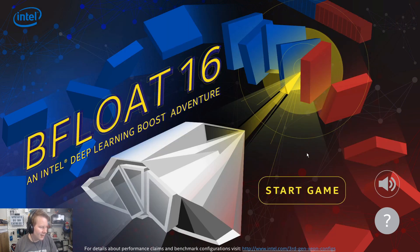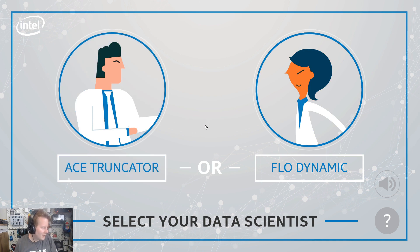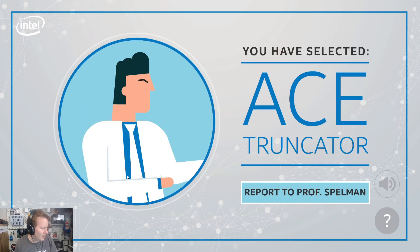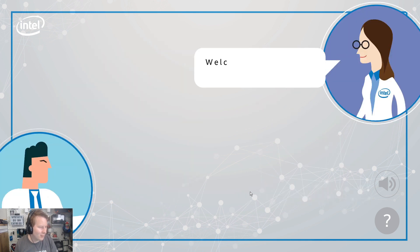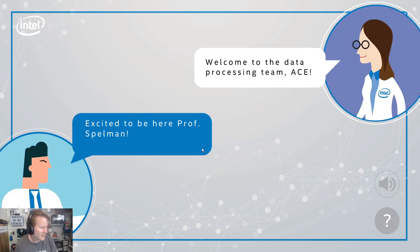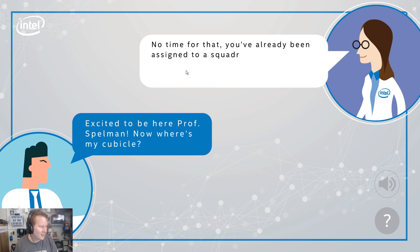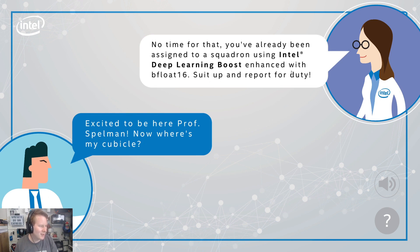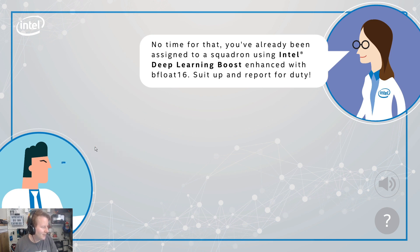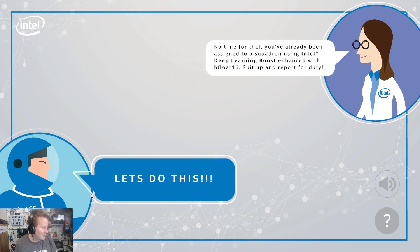Let's start the game. Do I want to be an ACE Truncator or Flow Dynamics? Select your data scientist — let's be ACE Truncator because that's first. 'Report to Professor Spellman.' 'Welcome to the data processing team, Ace.' 'Excited to be here, Professor Spellman. Now where's my cubicle?' I should point out that Spellman here is Lisa Spellman, general manager and vice president of Xeon and Memory Group XMG at Intel. 'No time for that — suit up and report for duty.' Let's do this.